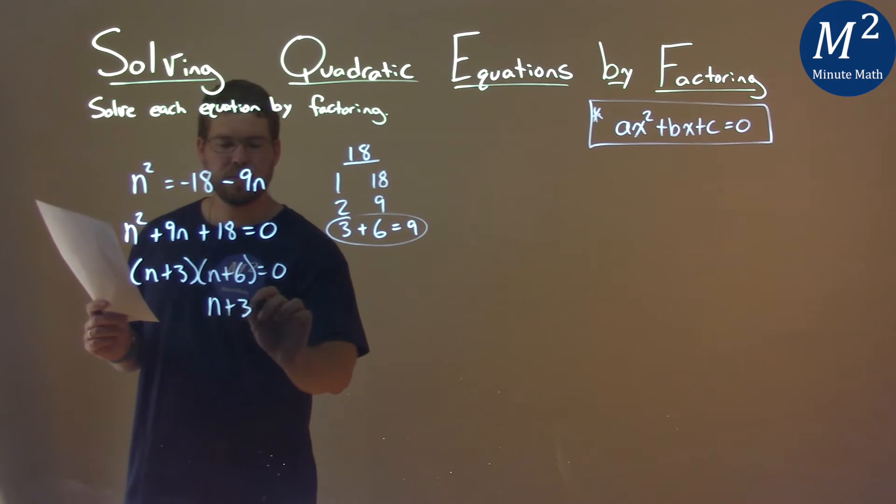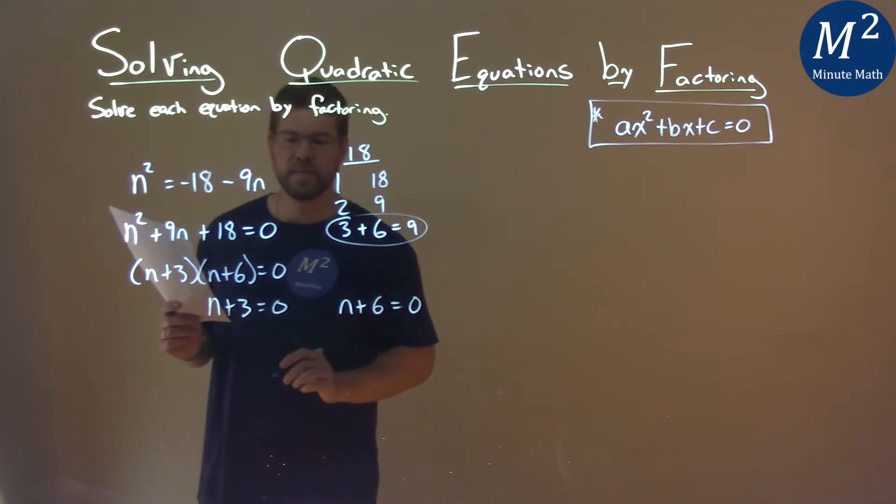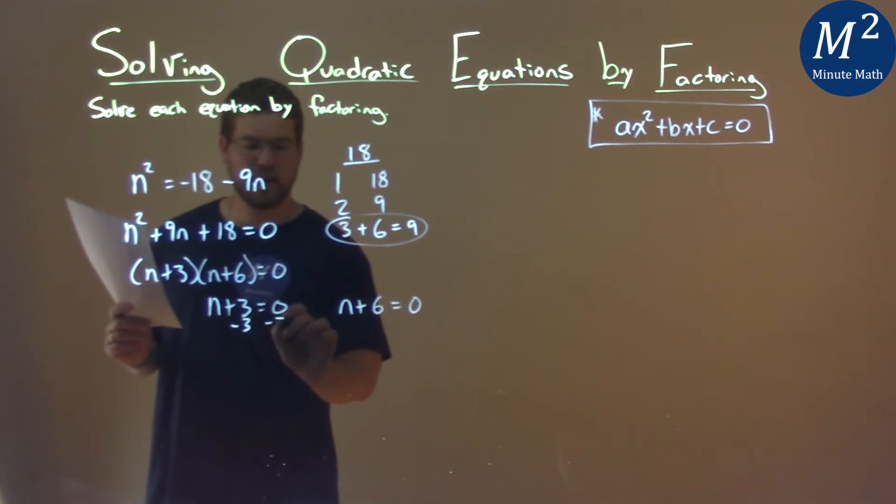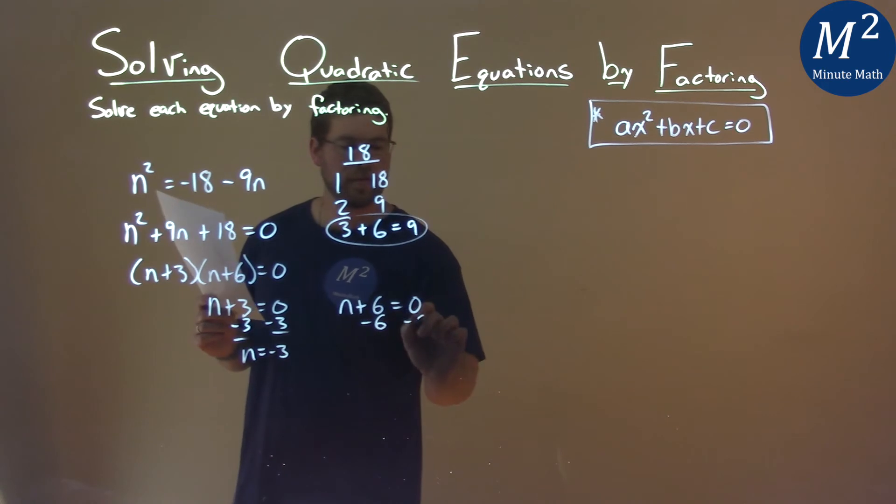So we have n plus 3 equals zero and n plus 6 equal to zero. And let's solve each one. Subtract 3, n equals negative 3. Subtract 6 here and n equals negative 6.